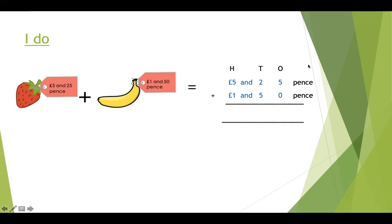So just like when we do regular column addition, the first column I'm going to add up is the ones column, and I know that five add zero gives me five. I'm then going to add up my tens column, and I know that two tens add five tens gives me seven tens. And lastly I'm going to add up my hundreds column where my pound coins are, and I know that five pounds add one pound equals six pounds. And remember, today we're going to write our answer six pounds and seventy-five pence.